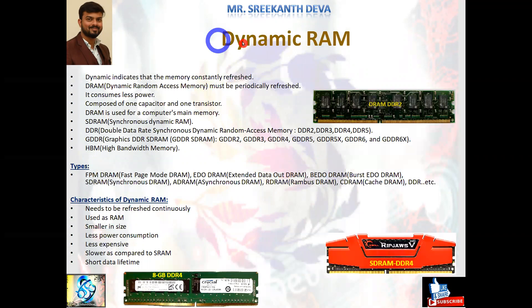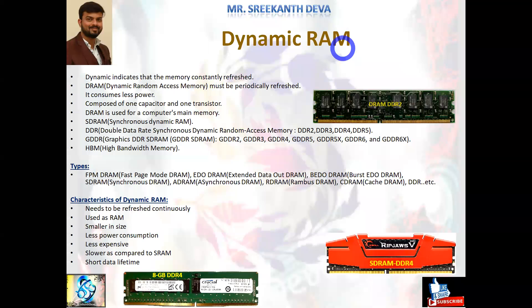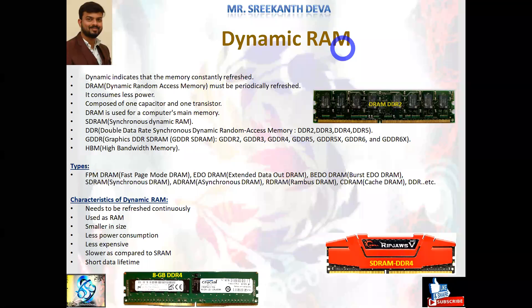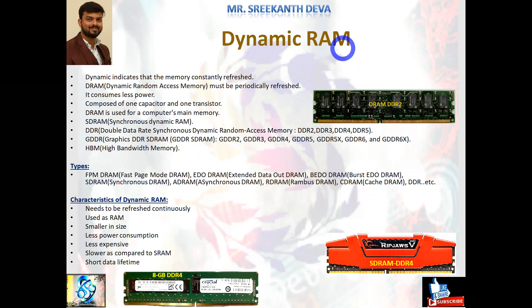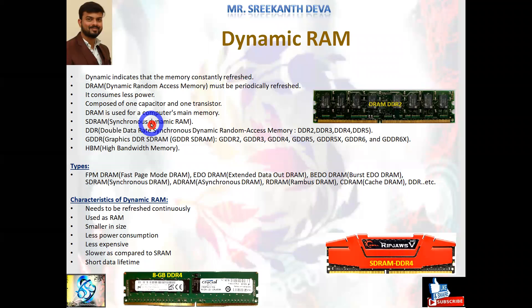The second type is Dynamic RAM, simply called DRAM. The term 'dynamic' indicates that the memory must be constantly refreshed. In static RAM, memory is not refreshed every time, but in Dynamic RAM the memory keeps refreshing. DRAM loses its stored information in a few milliseconds even though its power supply is on. It stores information in the form of charge on a capacitor, which leaks away in a very short time. Its contents must be periodically refreshed after every two milliseconds. DRAM consumes less power and is cheaper than static RAM.